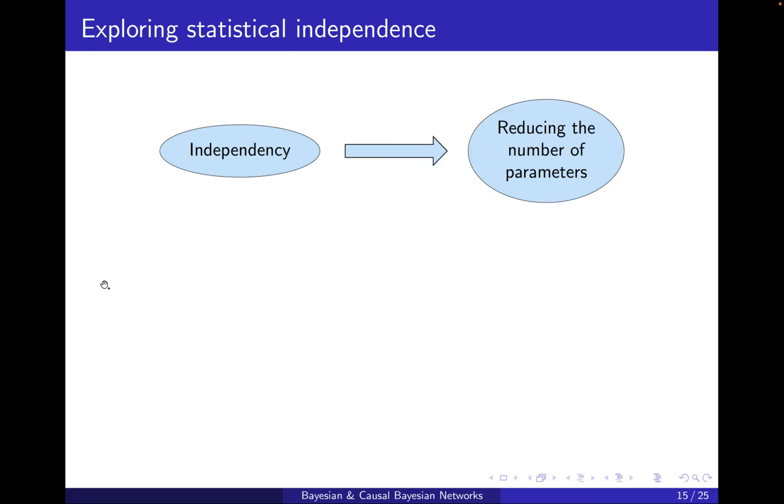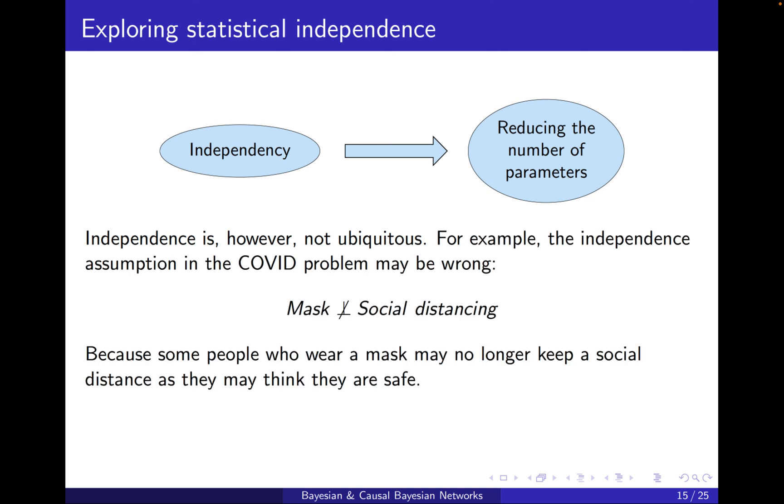Now, so to conclude here, I want to say exploring statistical independence has given us this idea that independency can reduce the number of parameters. However, independence is not ubiquitous. And the reason is, for example, the independence assumption in the COVID problem may be wrong. For example, people who wear masks may not also abide by social distancing, because they may think that they are safe when they put a mask. Now, some may believe so, some may not believe so. It can be different. So it's not generally true, perhaps, that the two are independent. And this means that our previous assumption, our dramatic reduction in the number of parameters in the previous slide does not work. We cannot assume that everything is independent of everything else. And then the question is, what now? Which we will cover in the next video.